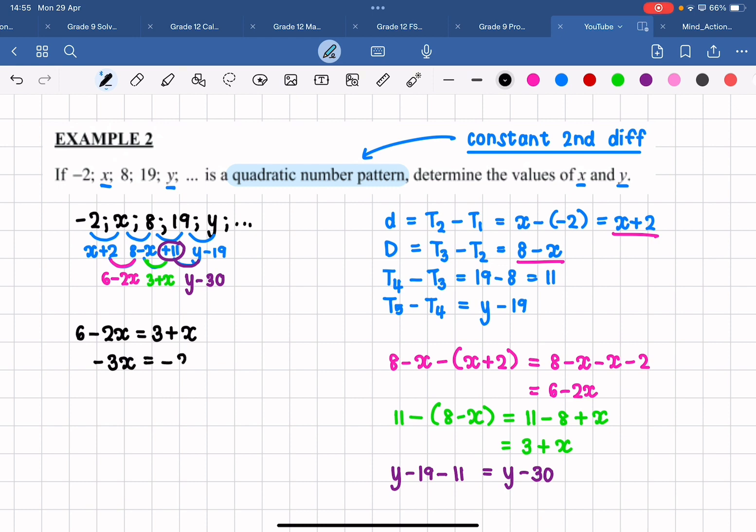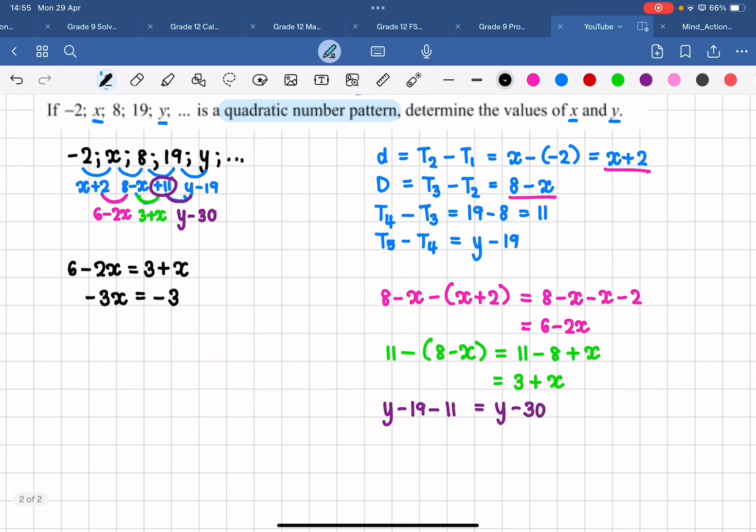So I'm getting all my x's on the one side, all my numbers on the other side, and I'm getting that x is equal to 1. There we go. That's great.